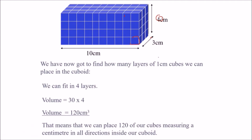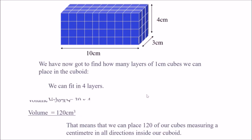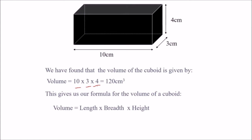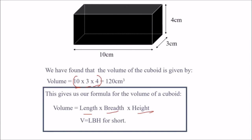That means we place 120 cubes measuring one centimeter in all directions inside our cuboid. We come to the conclusion that volume of the cuboid is length into breadth into height, written as L×B×H.